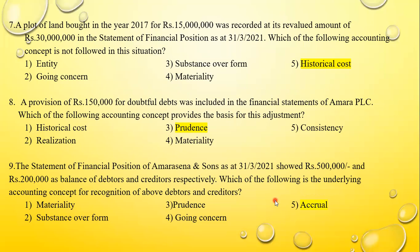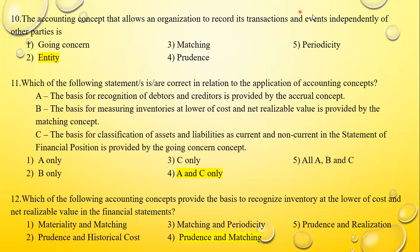Question nine: The statement of financial position of Amara Sen and Sons as at 31-3-2021 showed 500,000 rupees and 200,000 rupees as balances of debtors and creditors respectively. Which is the underlying accounting concept for recognition of these debtors and creditors? The answer is the accrual concept. Question ten: The accounting concept that allows an organization to record its transactions and events independently from the owner is the business entity concept.